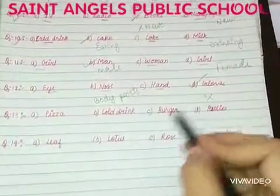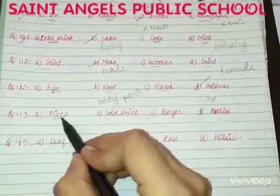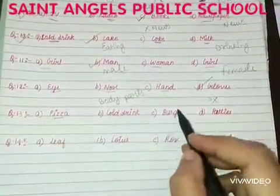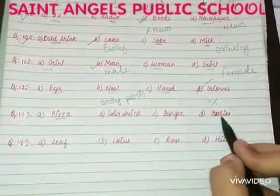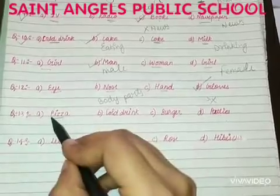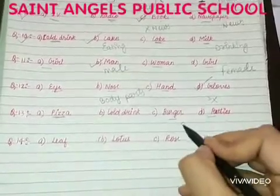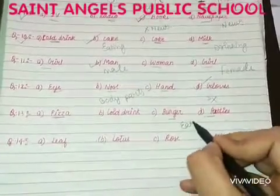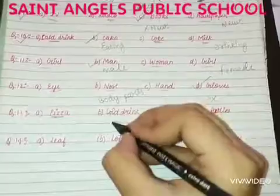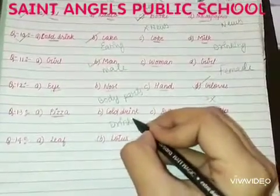In question 13, Option A is pizza, Option B is cold drink, Option C is burger, Option D is patties. Option A, C and D are for eating whereas Option B is for drinking. So tick Option B.